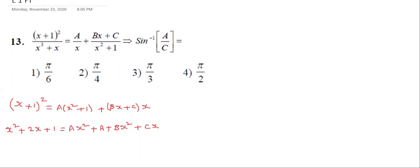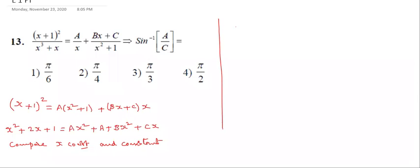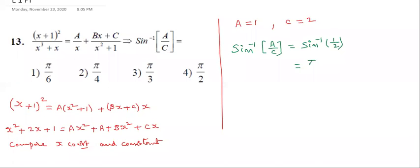Students, we need a and c values. Compare constant term and x coefficients. Comparing the constant term: a value is 1. Comparing the x coefficient: c value is 2. What they are asking is sine inverse of a by c — that is sine inverse of 1 by 2, which equals pi by 6. So the first option is correct.